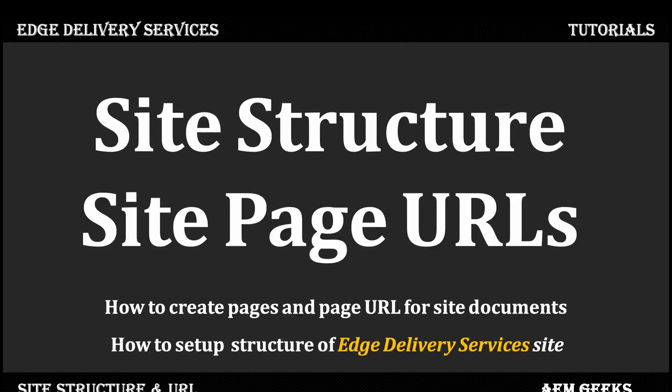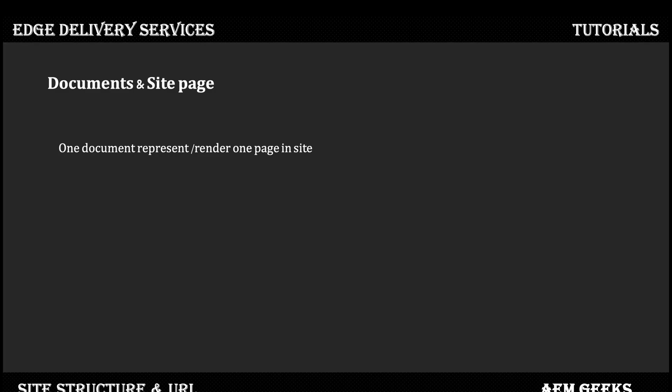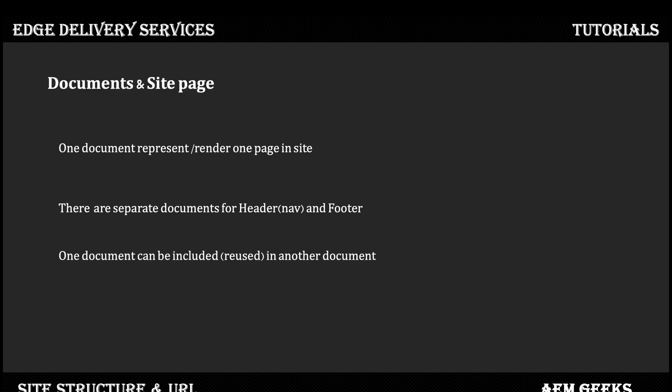In this tutorial I'll talk about how to design the content structure of your website and how the URL is formed with your content. In document-based authoring, each document represents one page. Each main content of that page is represented by one document. There are separate documents for the header and footer, and one document can be included or reused in other documents.